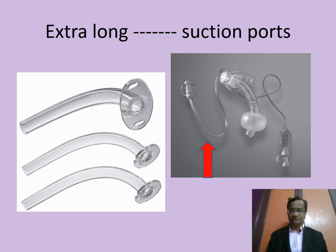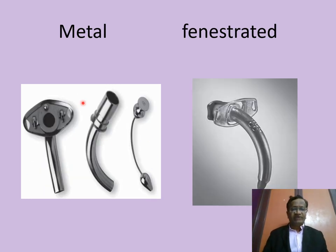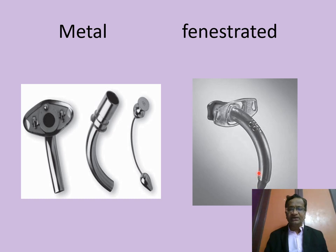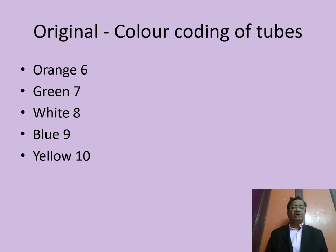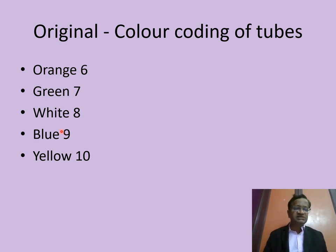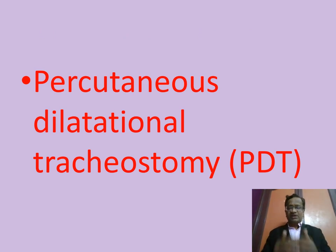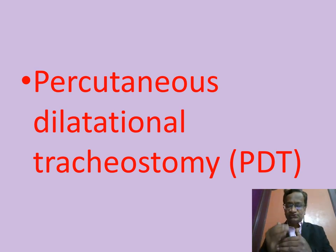You can have metal tubes with obturators and metal tubes with fenestrations — inner tube and outer tube with fenestration holes. Originally there was color coding of tubes: orange is size 6, green is 7, white is 8, blue is 9, yellow is 10. These are the types and uses of tracheostomy tubes.